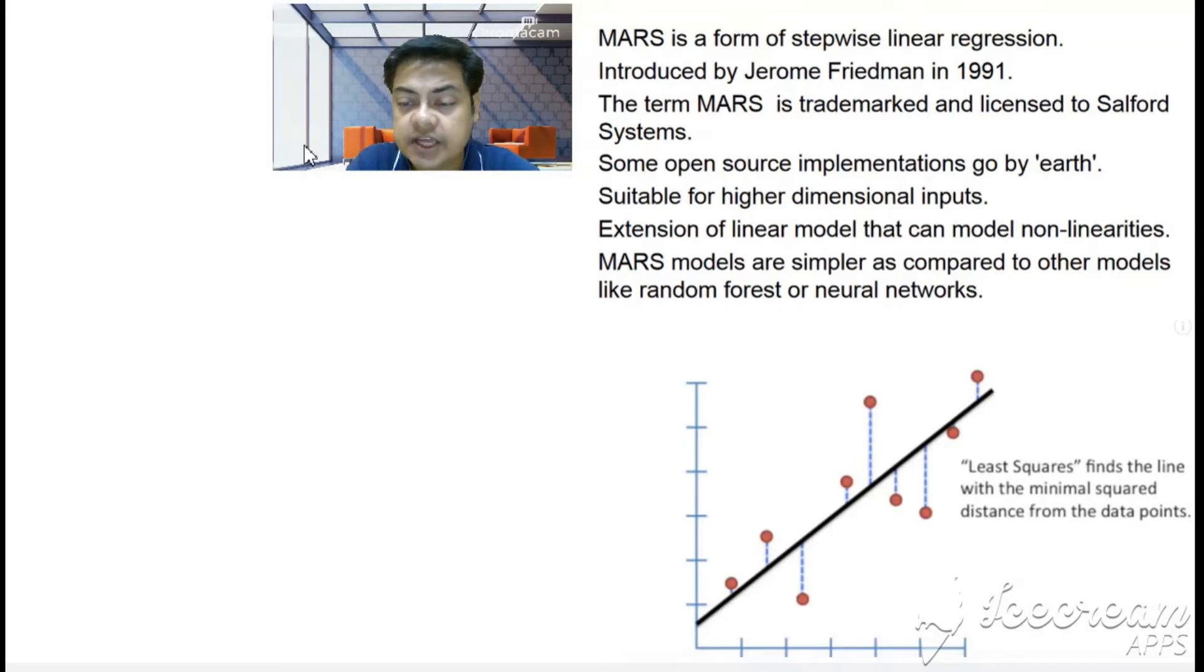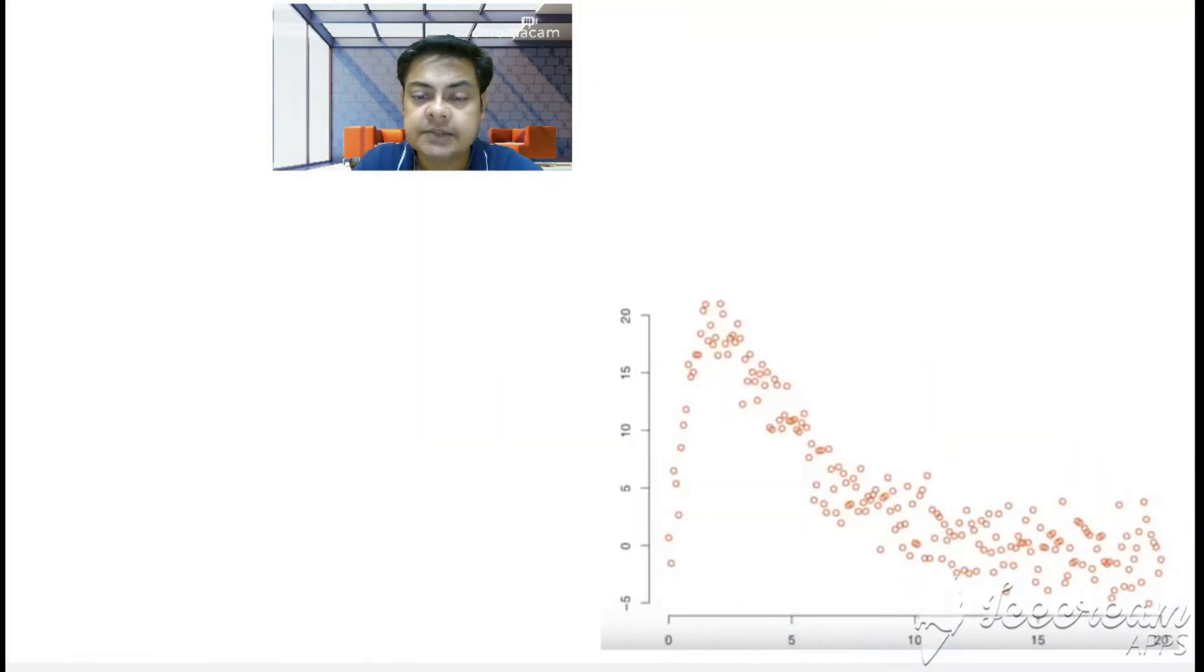What you're seeing right now on screen is the least squares or OLS linear regression model where there's a regression line represented by the black line. Some points are closer to the line, some points are away from the line. But if the points are too scattered, it becomes very difficult to fit a straight line.